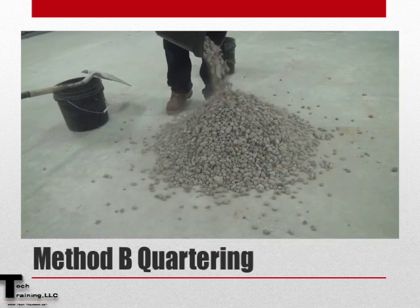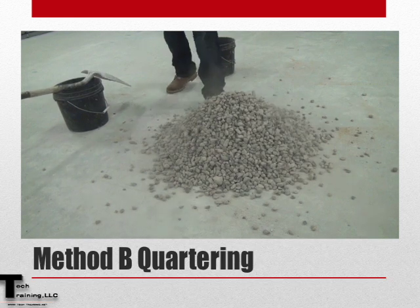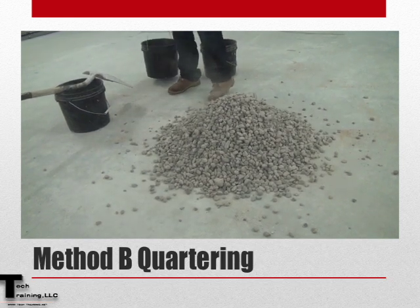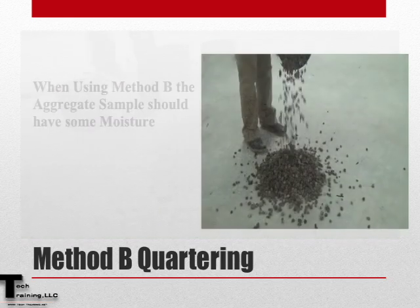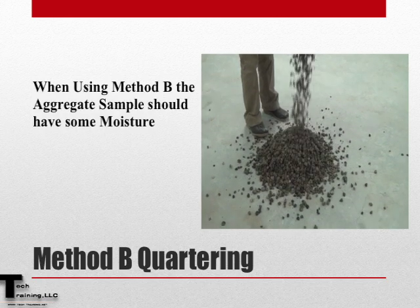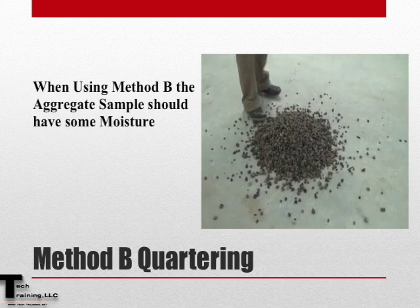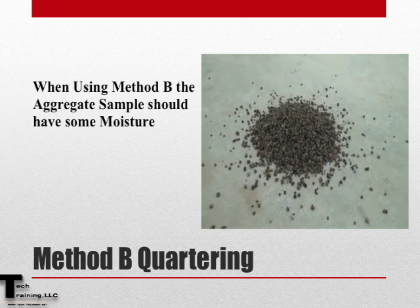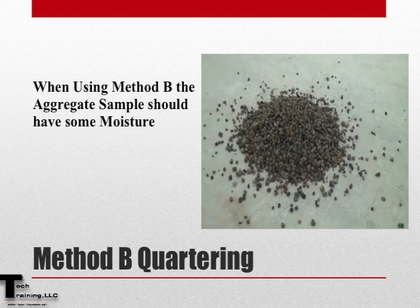Let's now review Method B — quartering a sample. Unlike Method A, when Method B is used, some surface moisture should be present on the field sample.